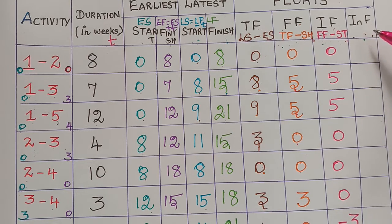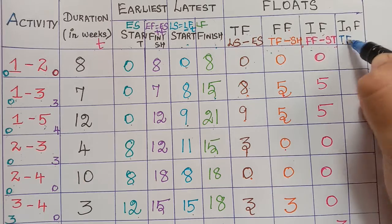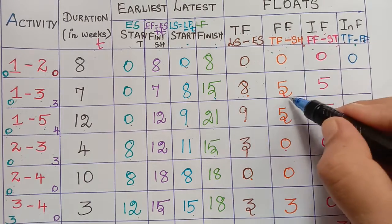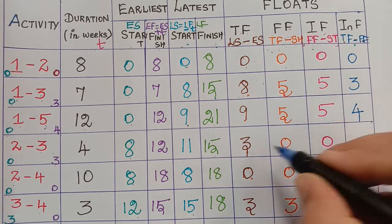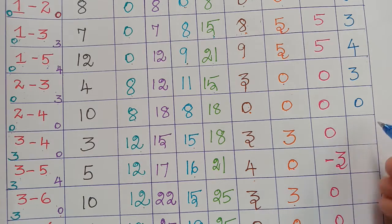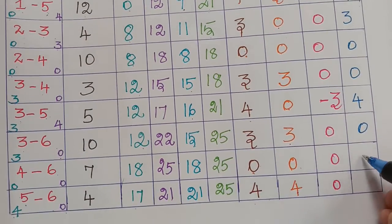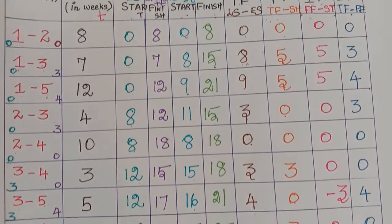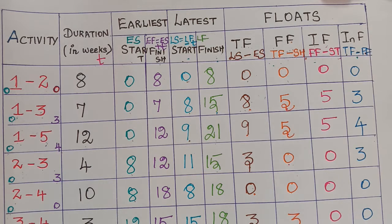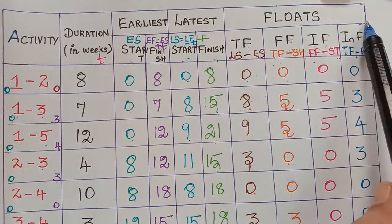Finally, interfering float — also known as interference float — equals total float minus free float. Values: 0 − 0 = 0; 8 − 5 = 3; 9 − 5 = 4; 3 − 0 = 3; 0 − 0 = 0; 3 − 3 = 0; 4 − 0 = 4; 3 − 0 = 3; 0 − 0 = 0; 4 − 4 = 0. We have now evaluated all floats as well as earliest start, earliest finish, latest start, and latest finish. In our next video we will cover the definitions of all these terms.